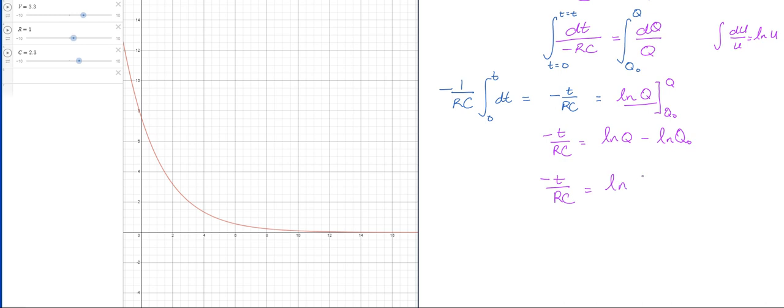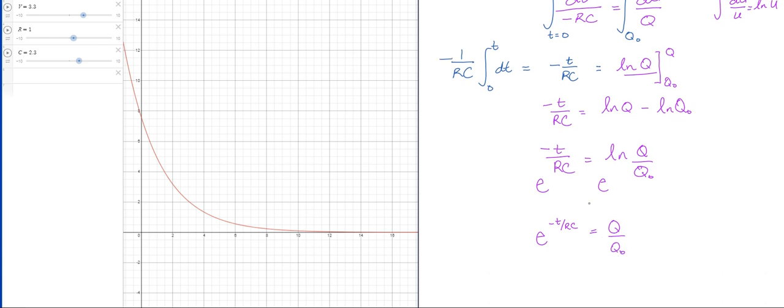Next step will be to exponentiate both sides, so I'll have e to the -t/RC. This side I have just Q over Q_naught. And then finally I'm going to solve for Q.